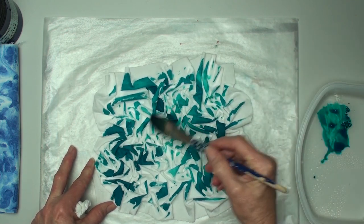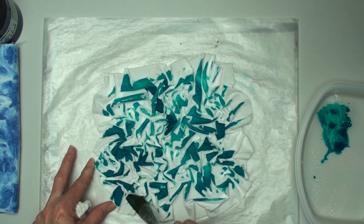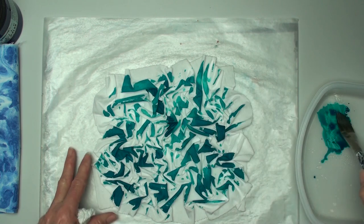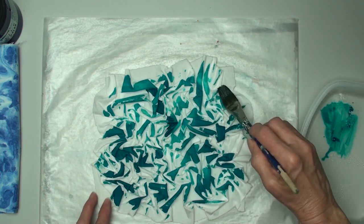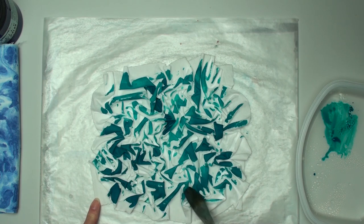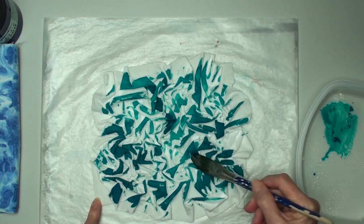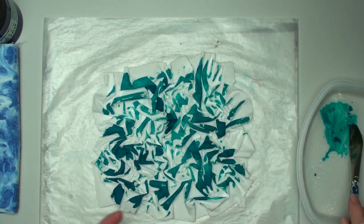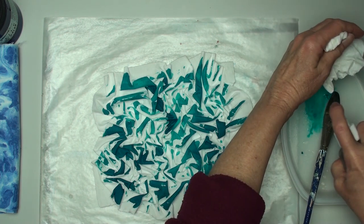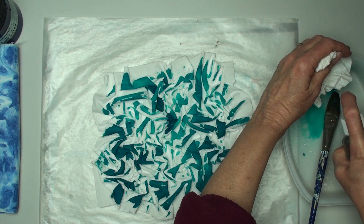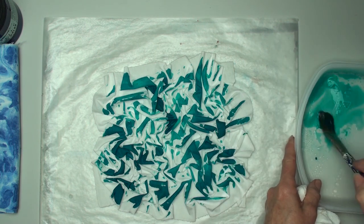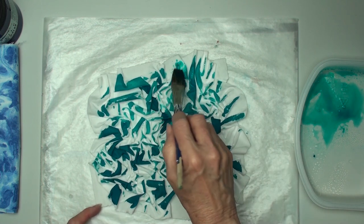I'm just going to keep taking it around on those high spots. Then once I have those high spots covered, one thing I'm noticing with this is it's using a lot more of the Setasilk than it did with the Jacquard, so the Jacquard will go farther. You won't use as much product, so that may be the way you want to go.